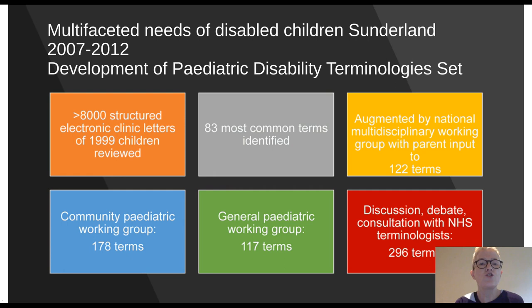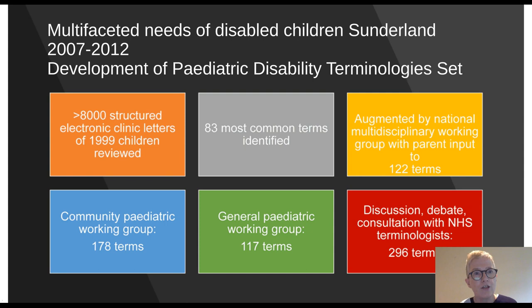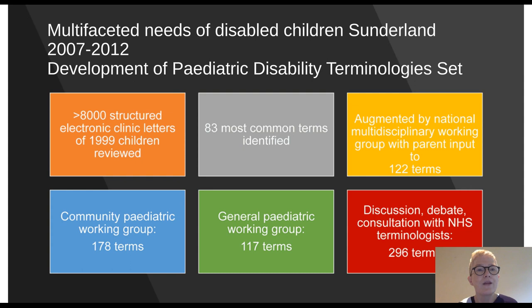We structure our clinic letters, which are all visible in the patient electronic medical record. The first thing I did was pour over over 8,000 of these letters belonging to 2,000 children and young people, and selected the 83 commonest terms — not just describing health conditions, but also aspects of environmental factors, activities and desire to participate. These 83 terms were then augmented by a national working group of paediatricians, allied health professionals, and very importantly a parent carer of a disabled child, to ensure the terms we used were meaningful.